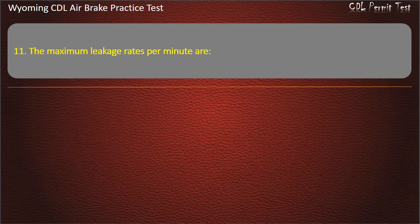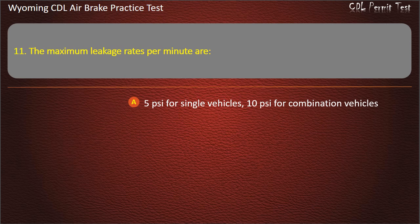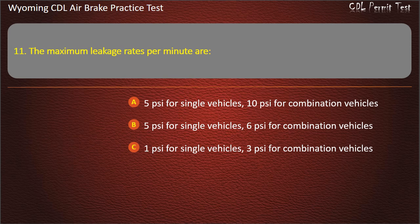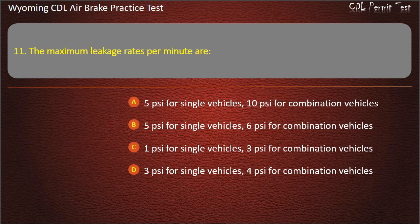Question 11. The maximum leakage rates per minute are: 5 pounds per square inch; 10 pounds per square inch; 3 pounds per square inch for single vehicles, 4 pounds per square inch for combination vehicles; 6 pounds per square inch for combination vehicles. Answer: 3 pounds per square inch for single vehicles, 4 pounds per square inch for combination vehicles.